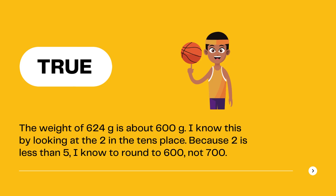Answer: True. The weight of 624 grams is about 600 grams. I know this by looking at the 2 in the tens place. Because 2 is less than 5, I know to round to 600 and not 700.